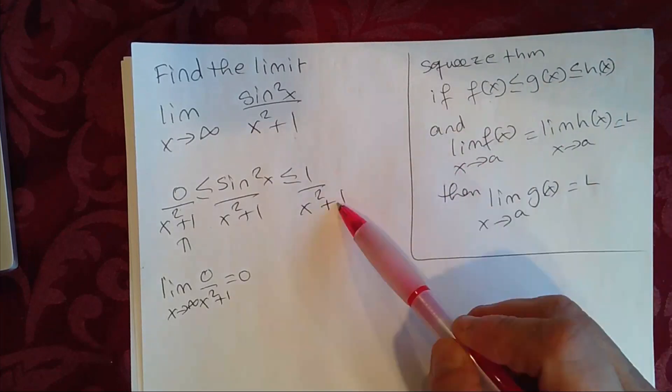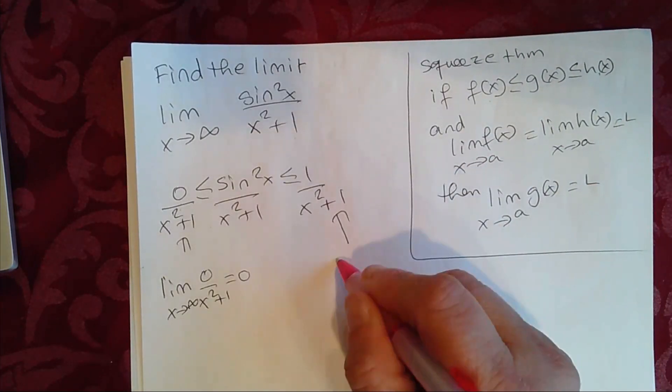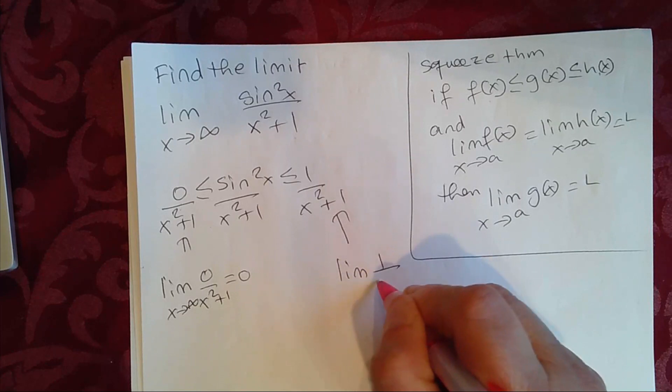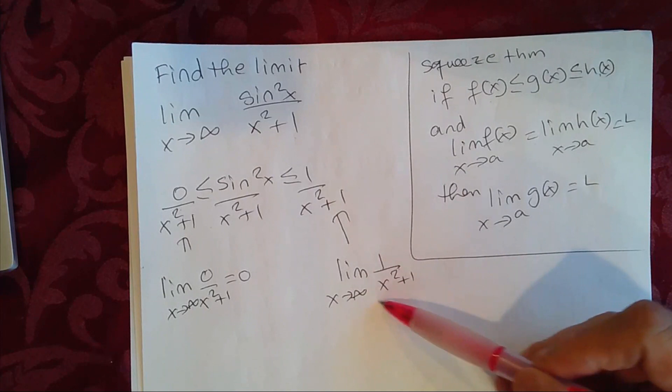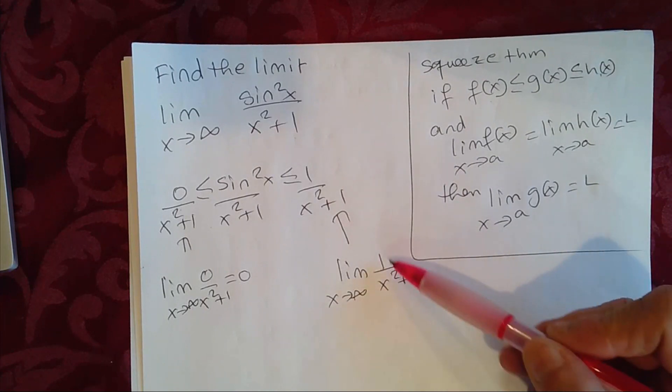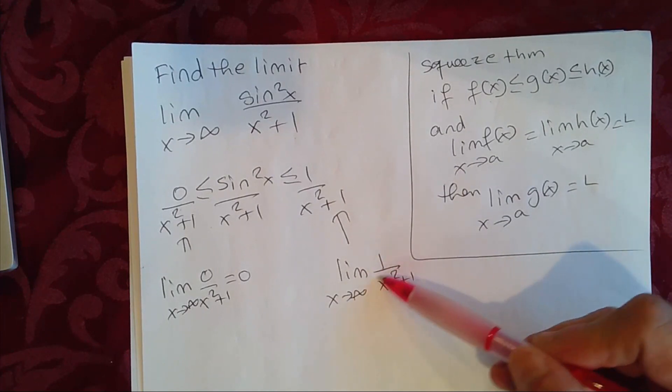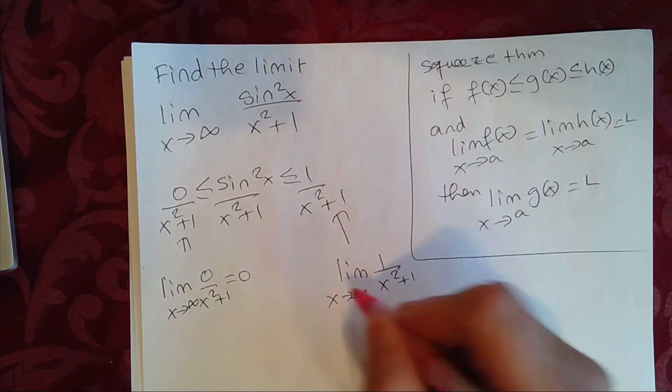Now, let's see. The limit of 1 over x squared plus 1 as x approaches infinity. So this is getting really large. So 1 over this large number, right, the limit of that is equal to 0.